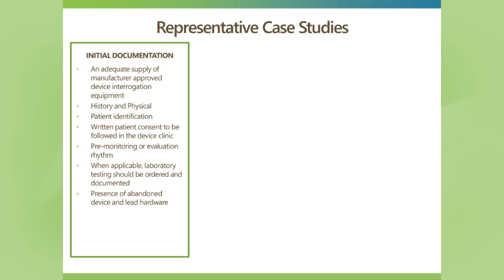When we ask for case documentation, we're going to look for initial documentation — what you have before and immediately when you've received the patient for the first time. That includes having the adequate supply of manufacturer-provided interrogation equipment, and a history and physical or at least a consult available with all the relevant documentation prior to actually having the patient come in the room. You also need the ability to do proper patient identification, and you must have a written patient consent or contract — really a permission for the patient to be followed in a device clinic, confirming the agreement for follow-up.